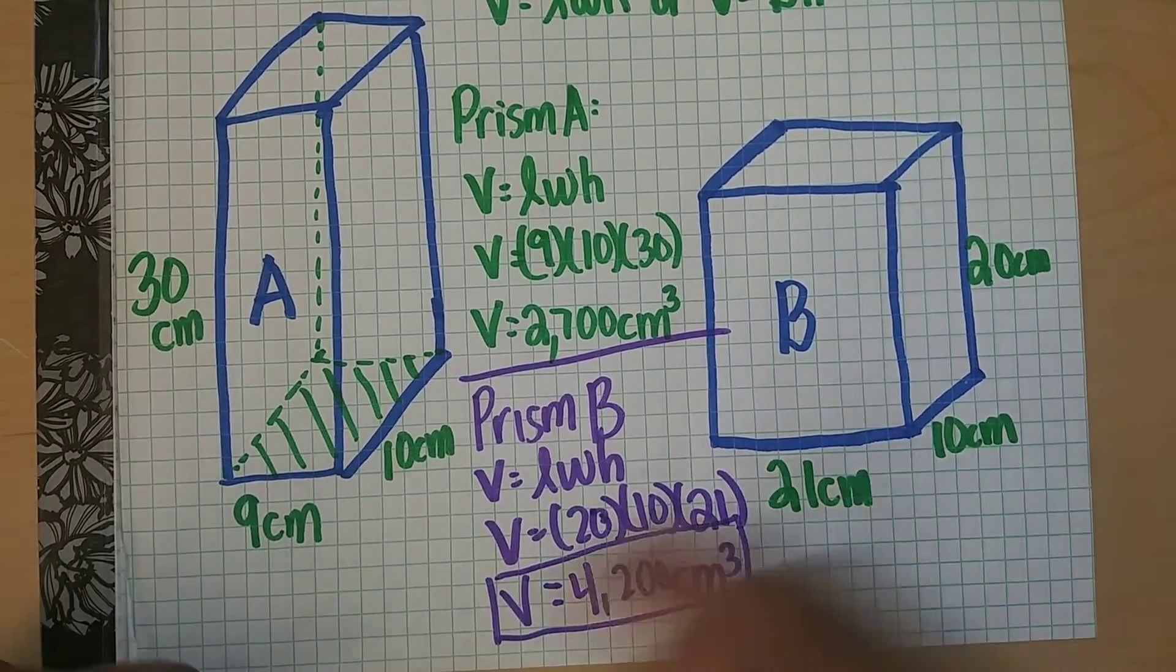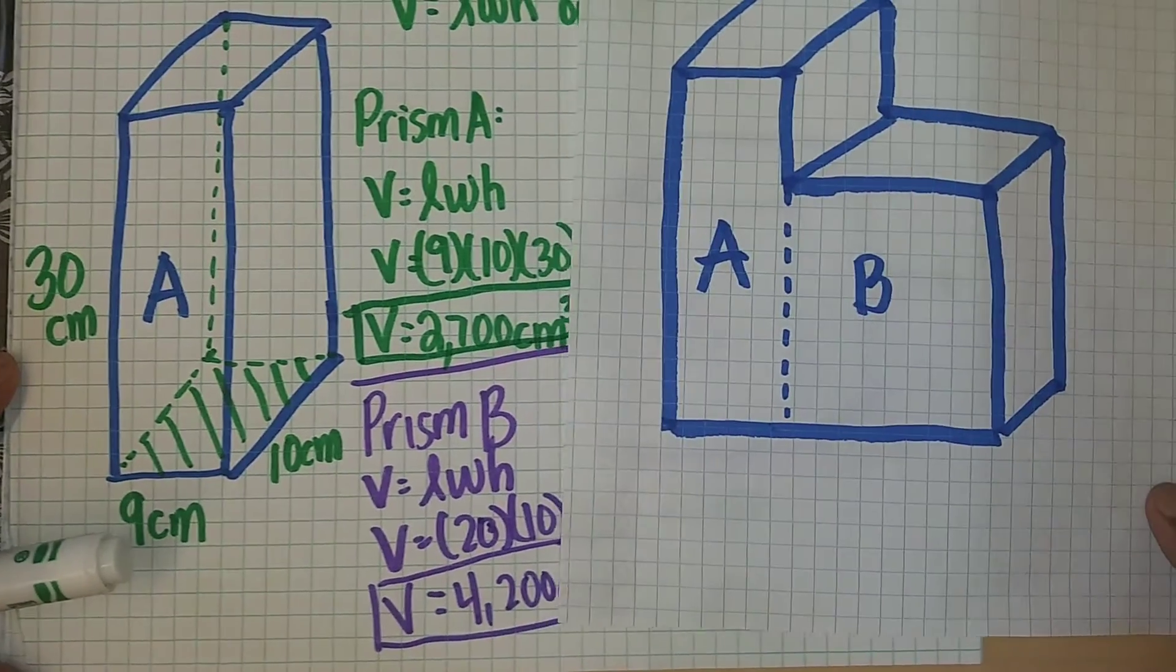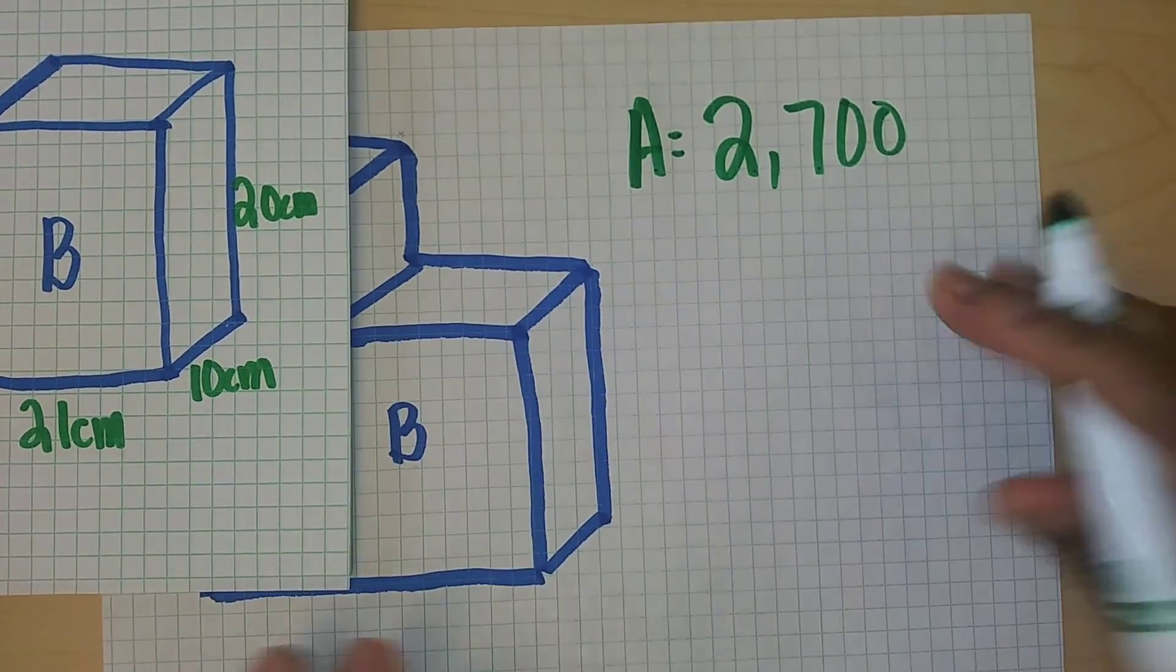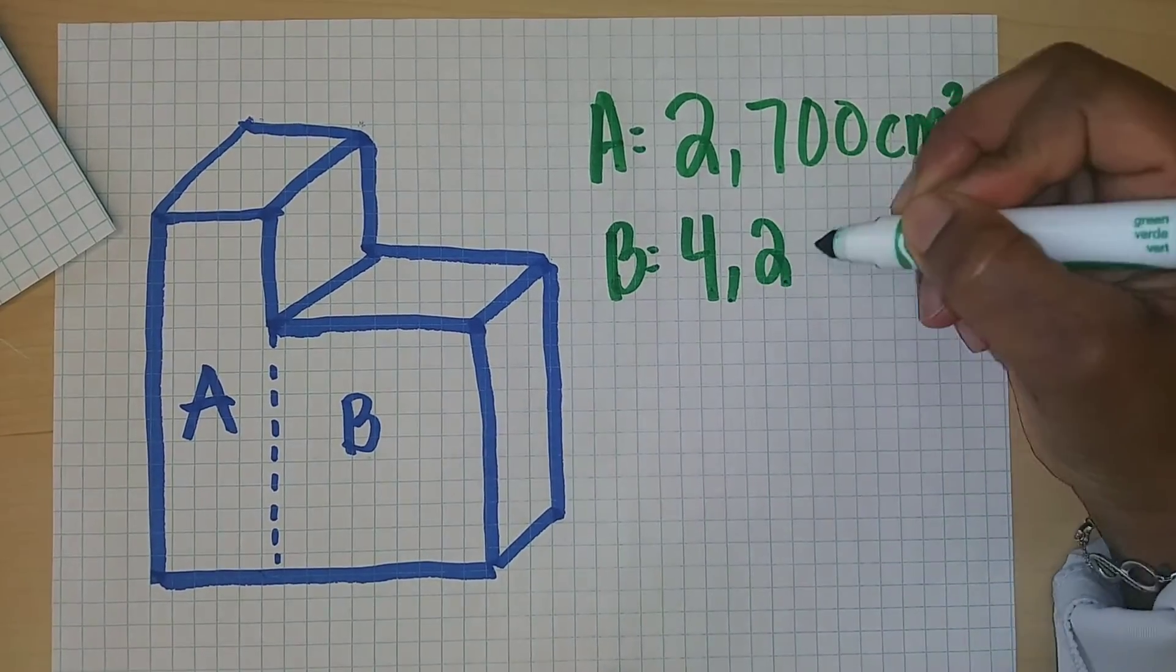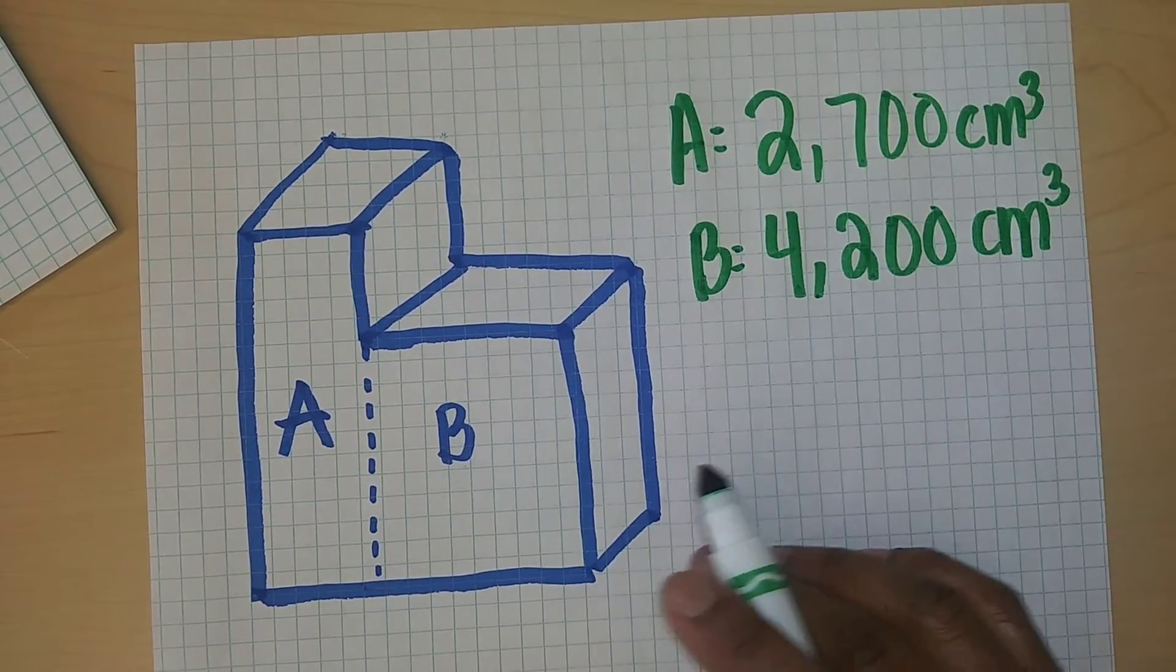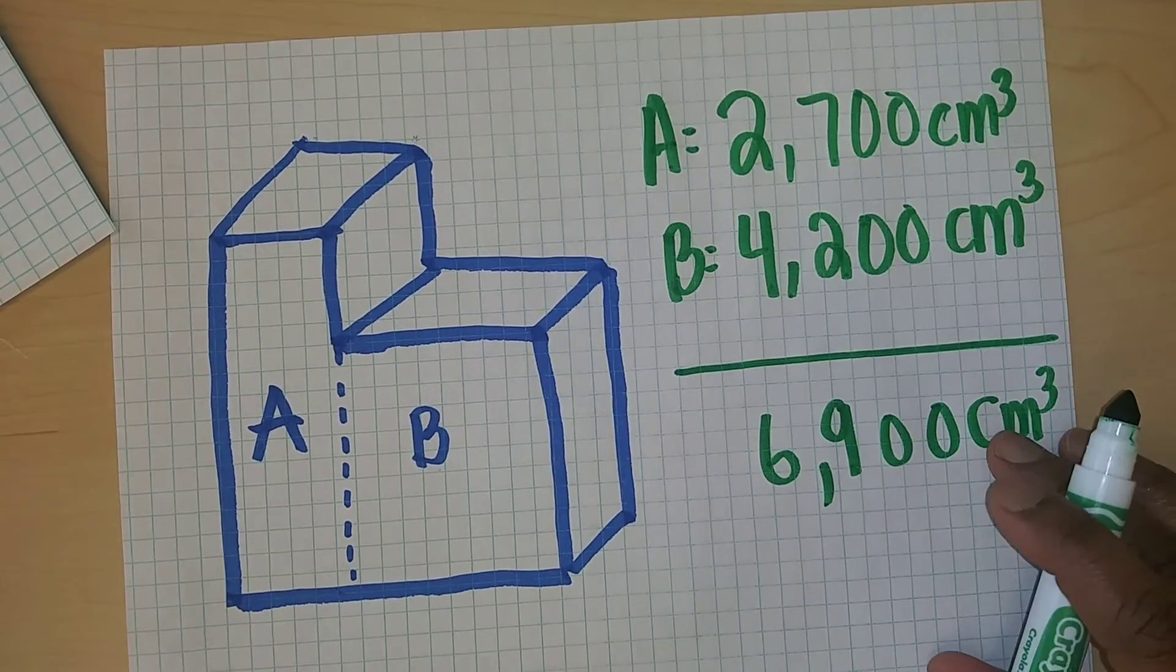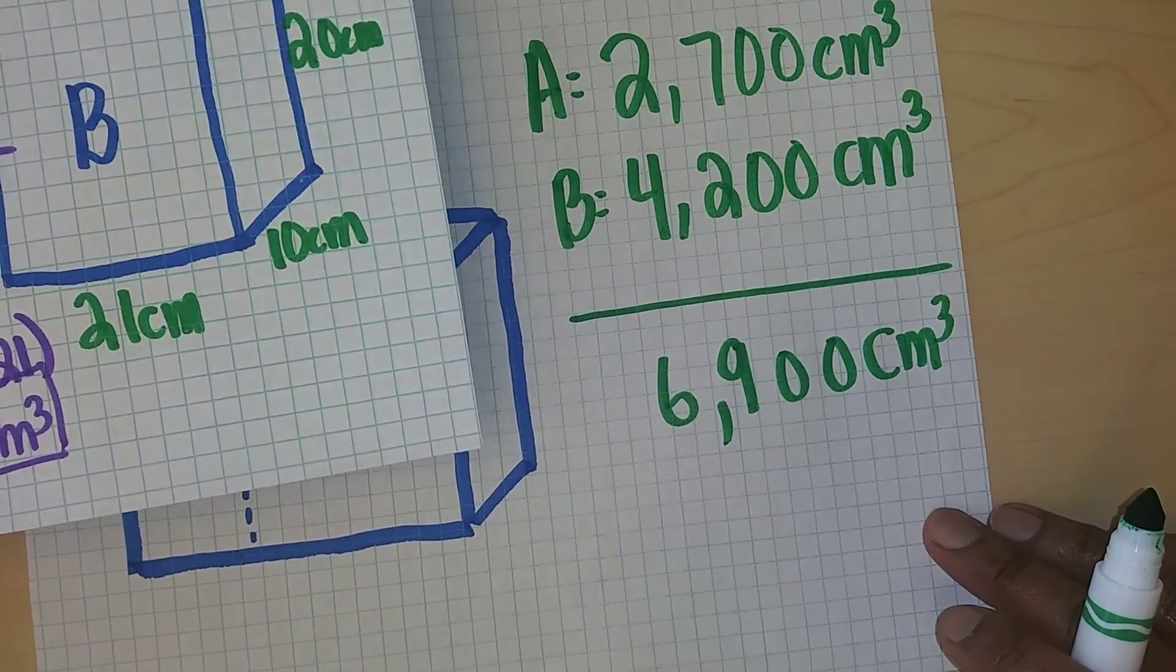Now we have the volume of prism A and we have the volume of prism B, but the ultimate goal is to find the volume of this entire composite area. So what I'm going to do is transfer these numbers over. Prism A came out to 2700 cubic centimeters, and prism B came out to 4200 cubic centimeters. In order to find the volume of this L-shaped prism we need to make sure that we take the two volumes of the prisms and add them up. So the volume of this entire composite figure is going to be 6900 cubic centimeters.